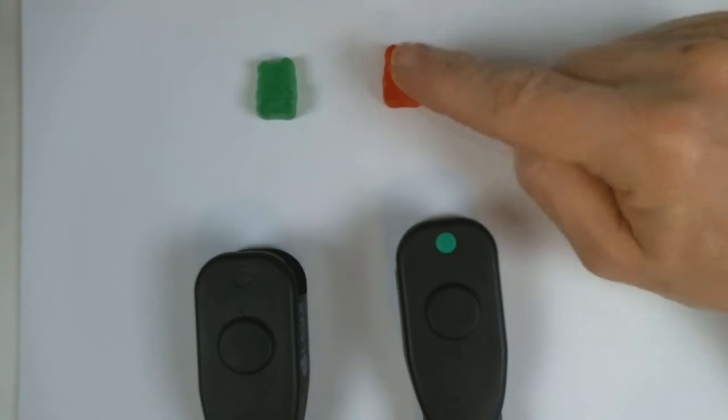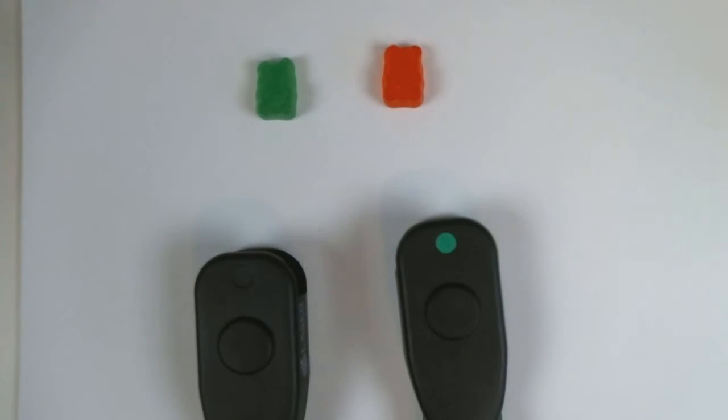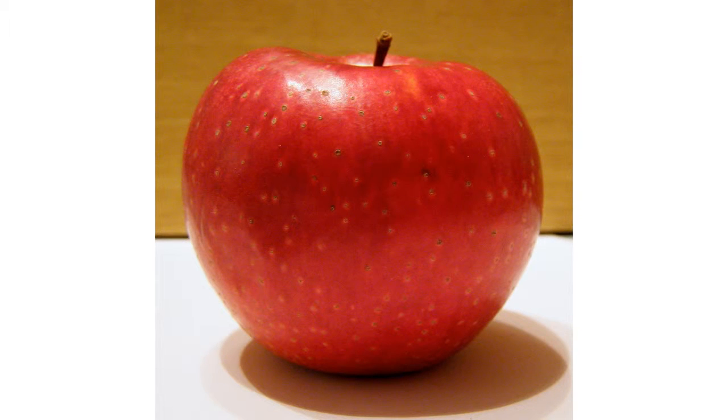For example, if I place something shiny and red like a big red apple in sunlight on a white sheet of paper, you're going to see a red glow show up on the paper. And the question is, where did that red light come from? Did the apple add its own color to otherwise clear sunlight?